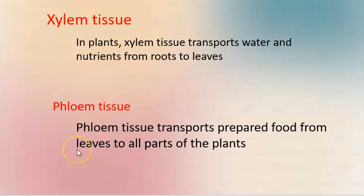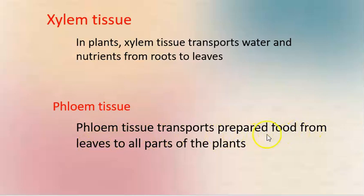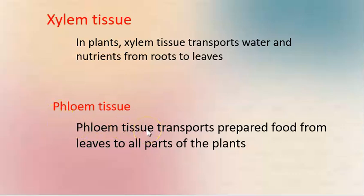Phloem tissue transports prepared food from leaves to all parts of the plants. Because leaves perform photosynthesis, the prepared food is made in the leaves. This is called xylem tissue and phloem tissue, and they are ready to transport all of them.